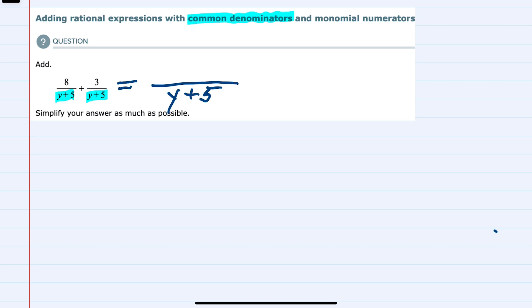And in the numerator, we just go across the top. 8 plus 3 is going to be my numerator. And we're told to simplify as much as possible.